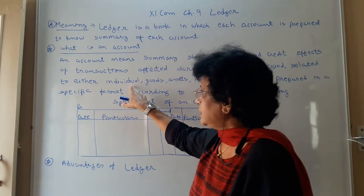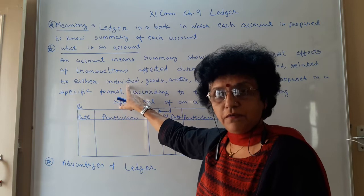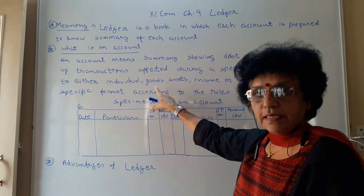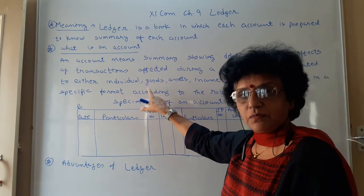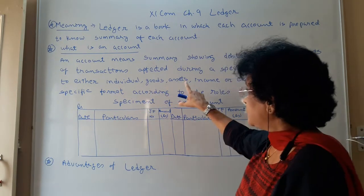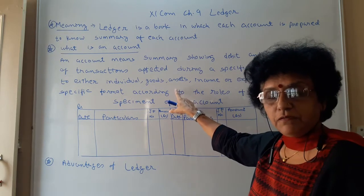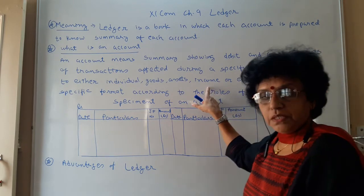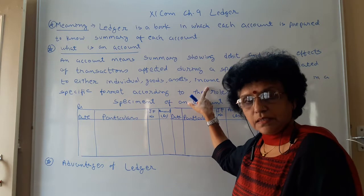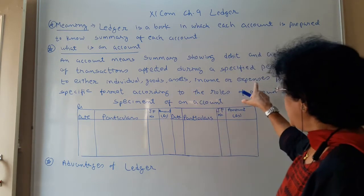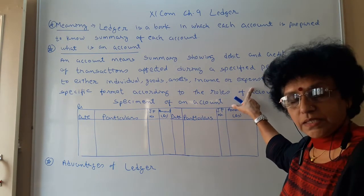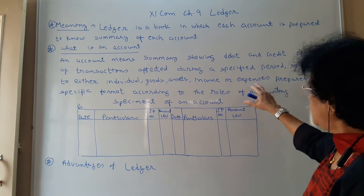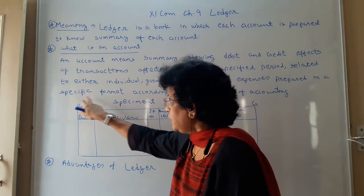The account may be of an individual — Ram, Shyam, Ganshyam, Suresh, or Ramesh. It may be of goods — purchase account, sales account, purchase return, sales return. It may be of assets — plant, machinery, furniture, building. It may be income — commission received, rent received, dividend received, discount received. Or it may be expenses — salary paid, wages paid, carriage paid. All such types of particular accounts are prepared in a specific format.